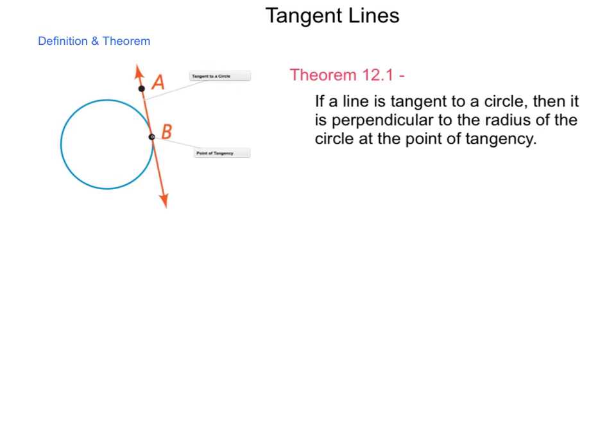So if I were to come up here and take a radius of this circle, as best I can, it would be perpendicular to this tangent. And that's going to have a lot of effect.